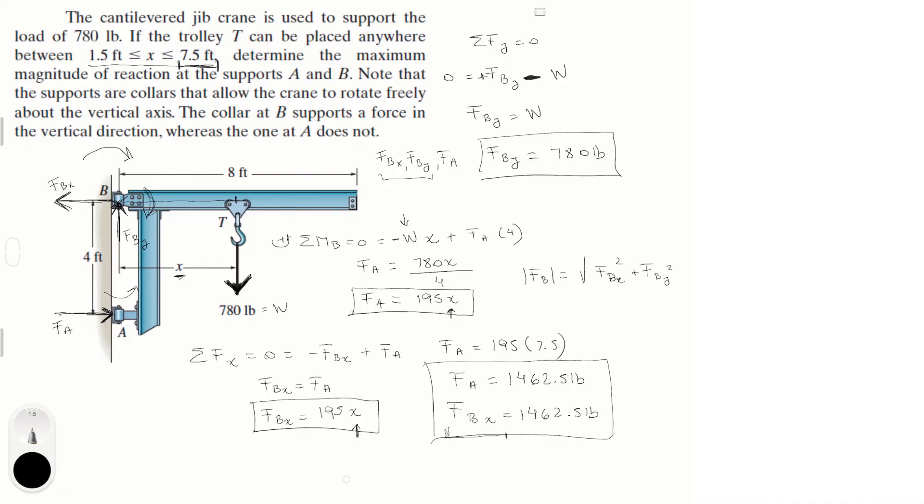because it's equal to the square root of F of B of x squared plus F of B of y squared. So you gotta plug this number in, and this number in, and you should get that the magnitude, the maximum magnitude for F of B is equal to 1657.05 pounds.